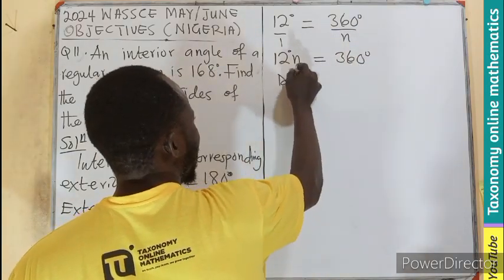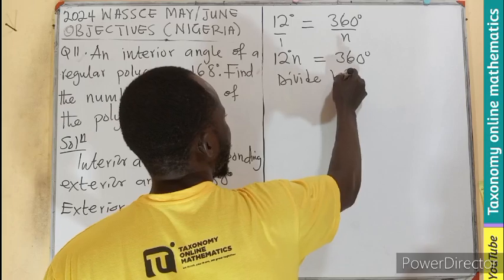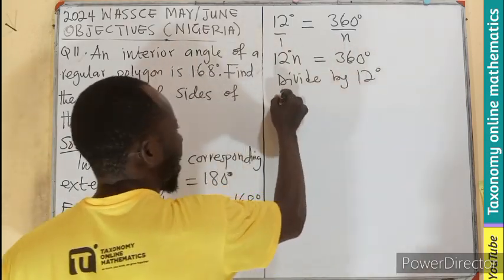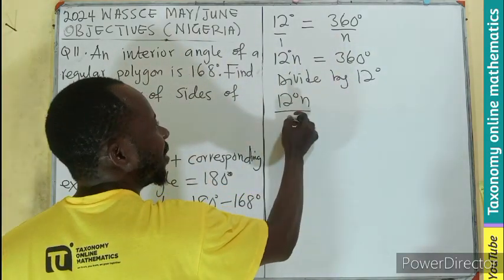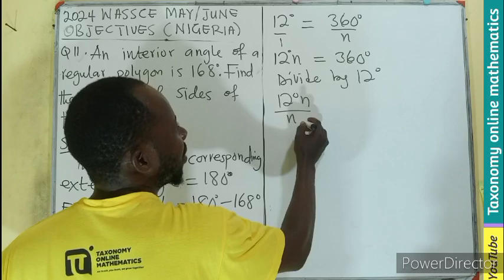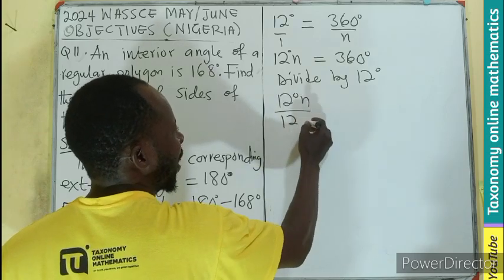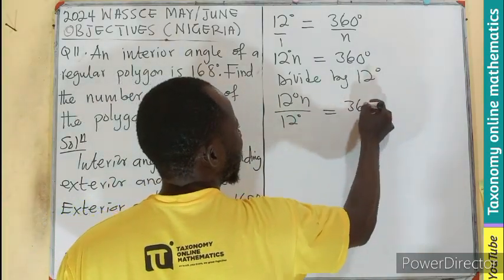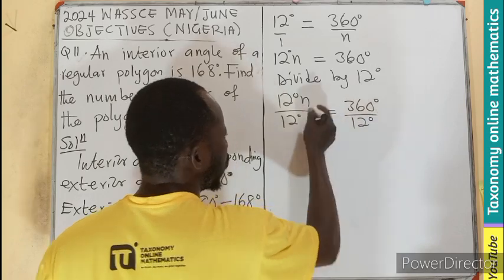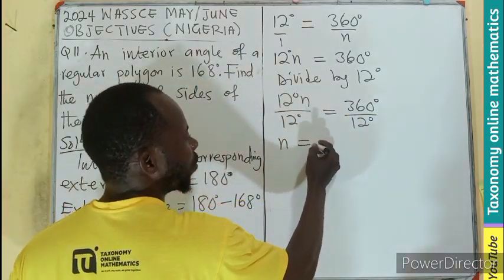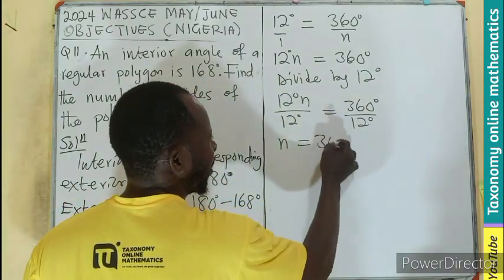Divide both sides by 12 degrees, then 360 divided by 12—it will cancel and n will be equal to 30.